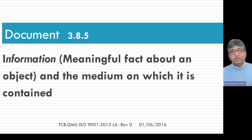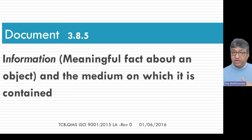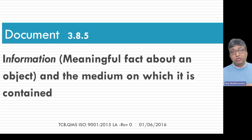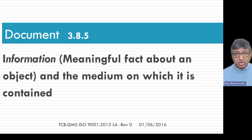For example, if you have written a certain instruction for doing something in a certain way, that is basically meaningful fact or information, and it is contained in a piece of paper — so it's the printed media. Books are printed media. Certain documents are available in the computer — these are electronic media.